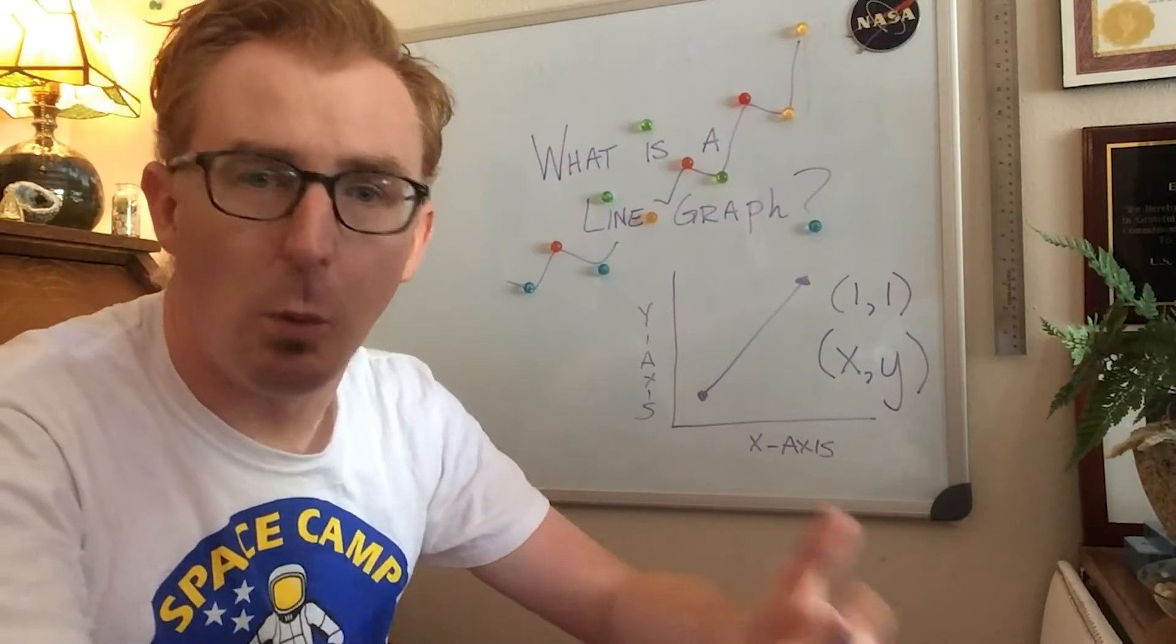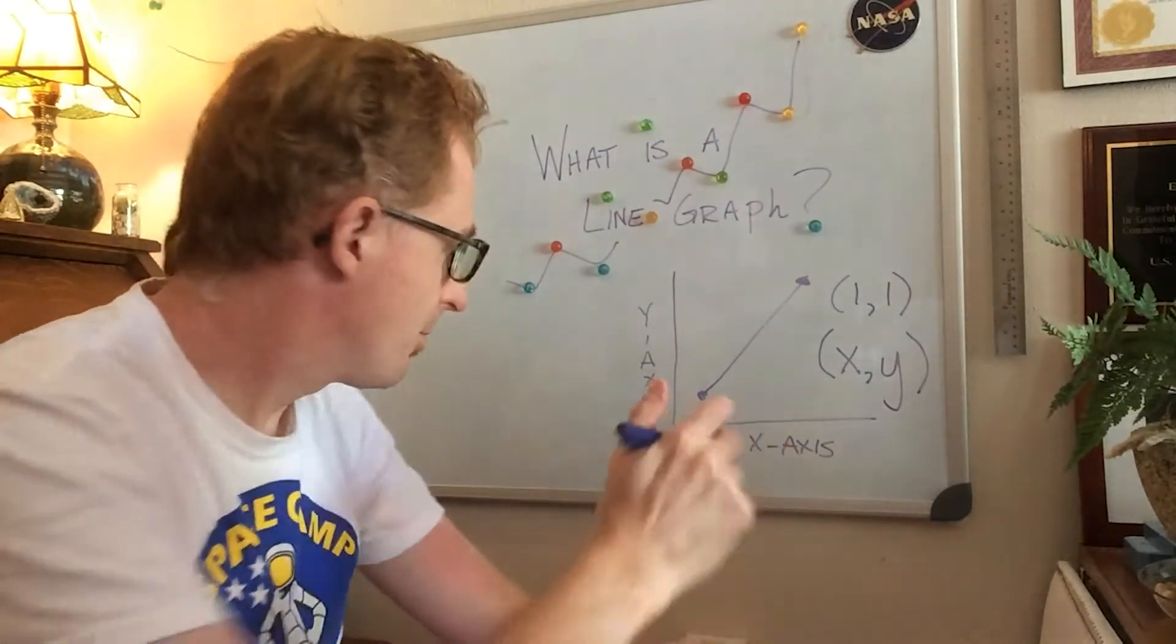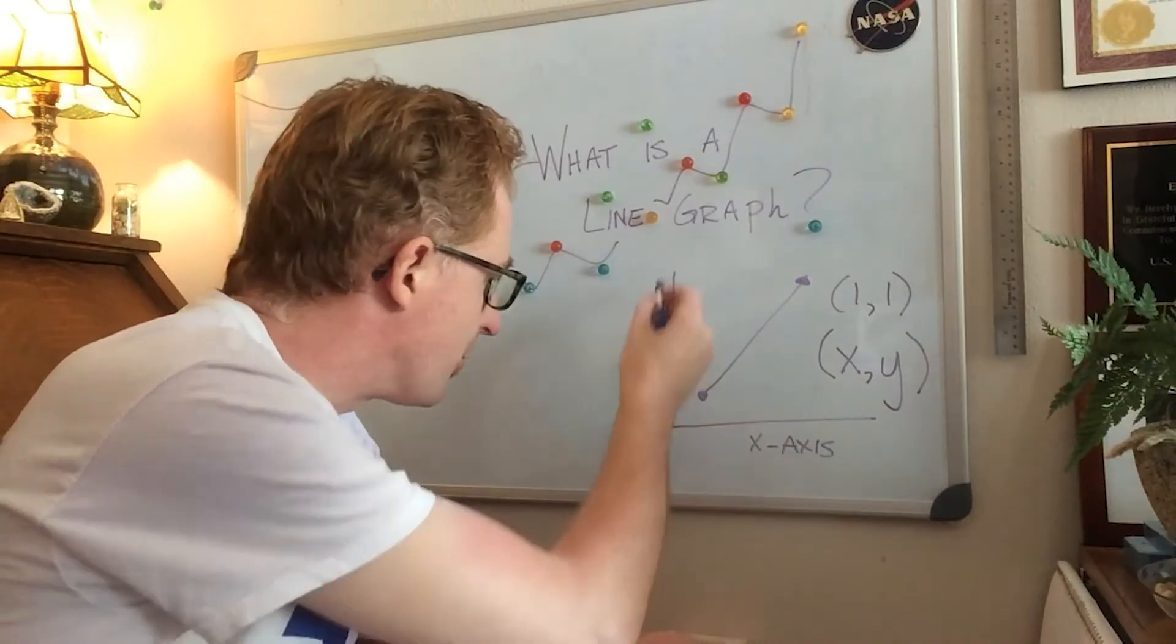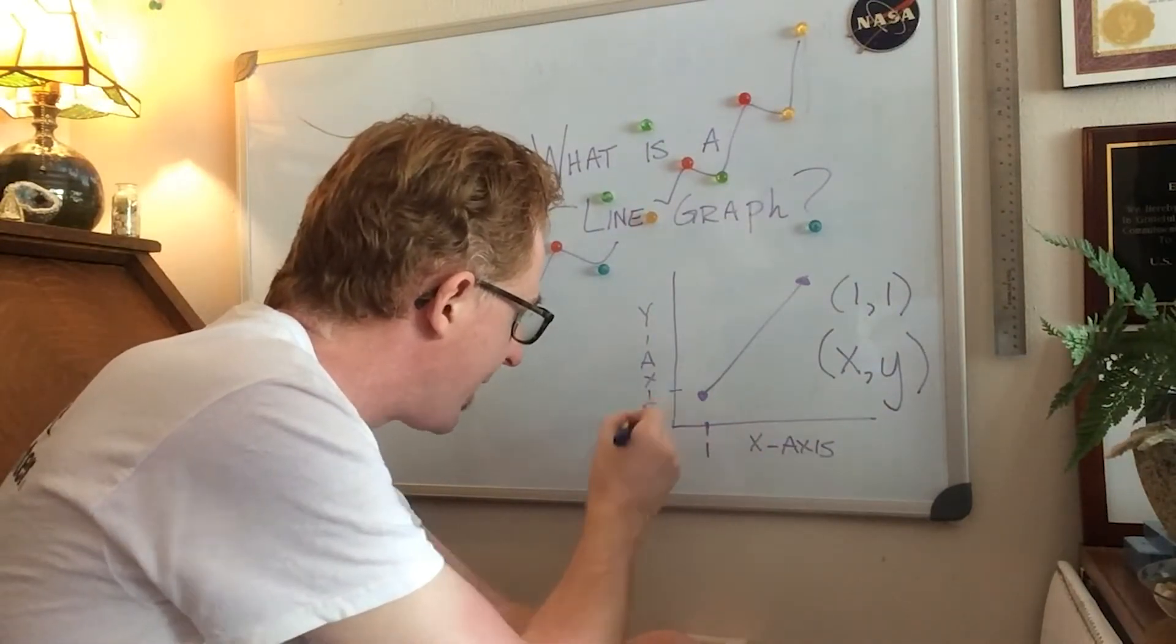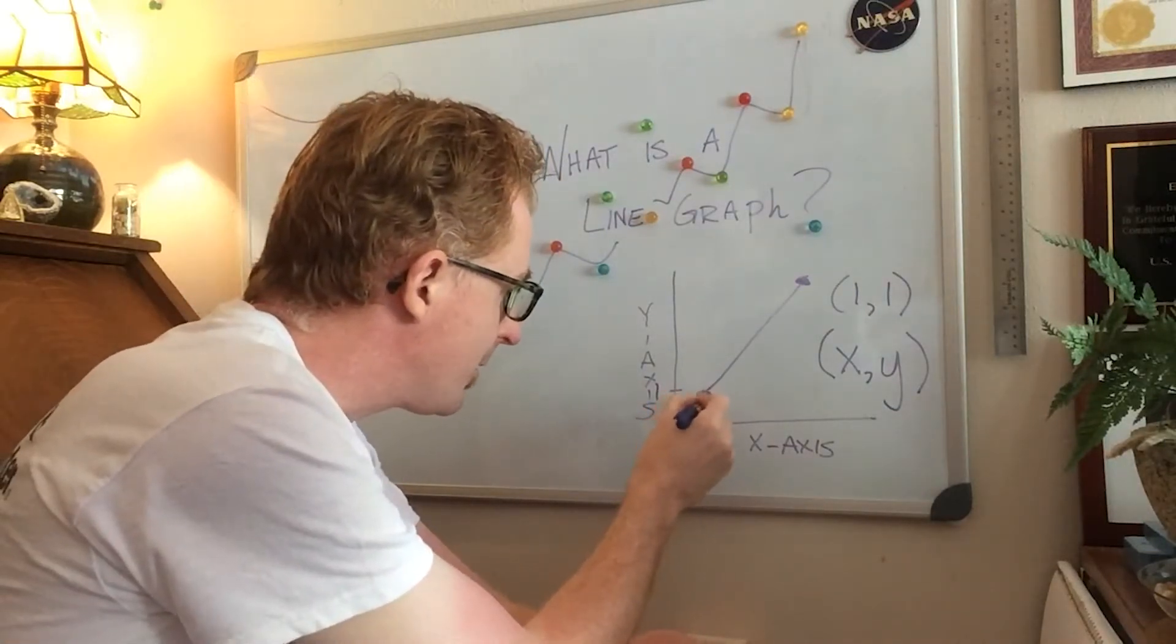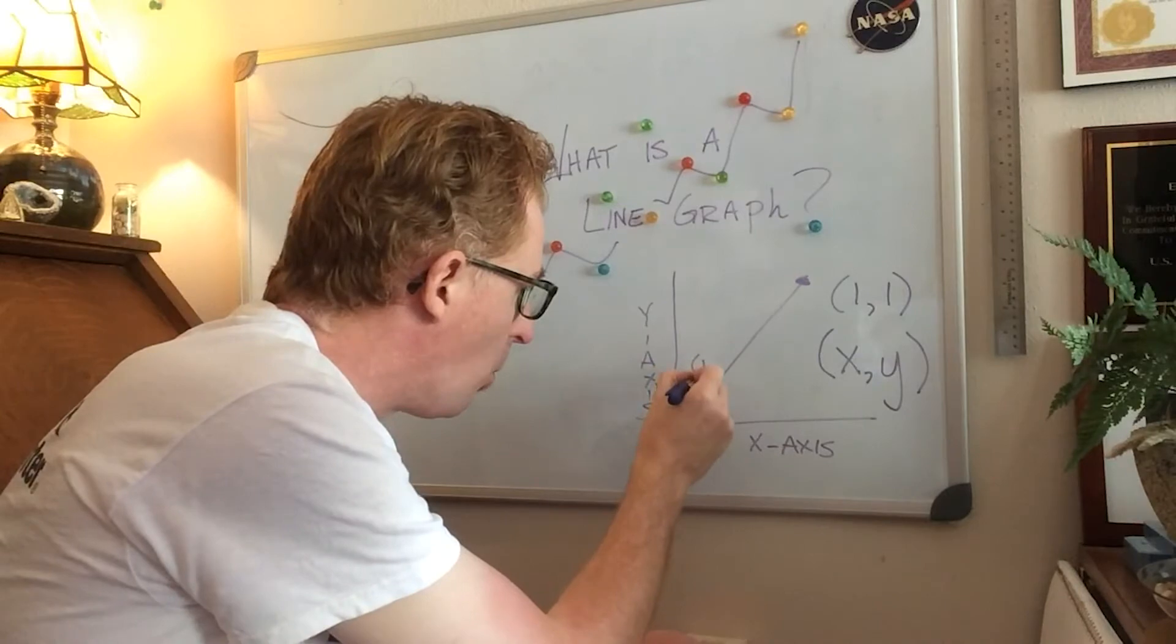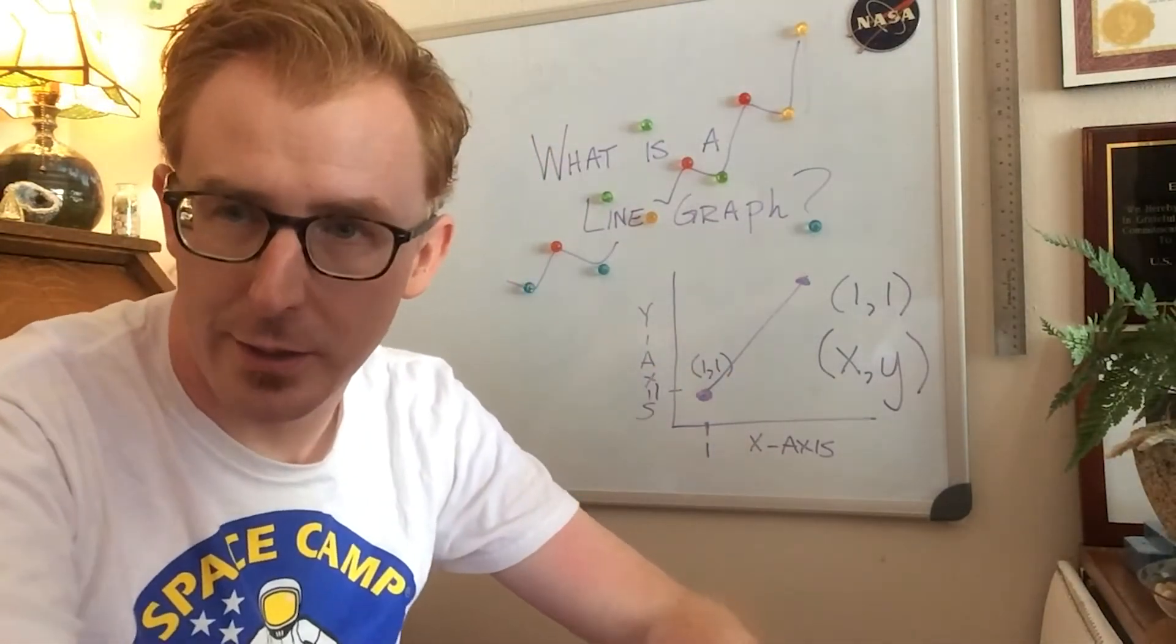And if we were going to plot 1, 1 in our graph, you would have to denote your values for x. So the point that we have here would be 1, 1. That would be our data point.